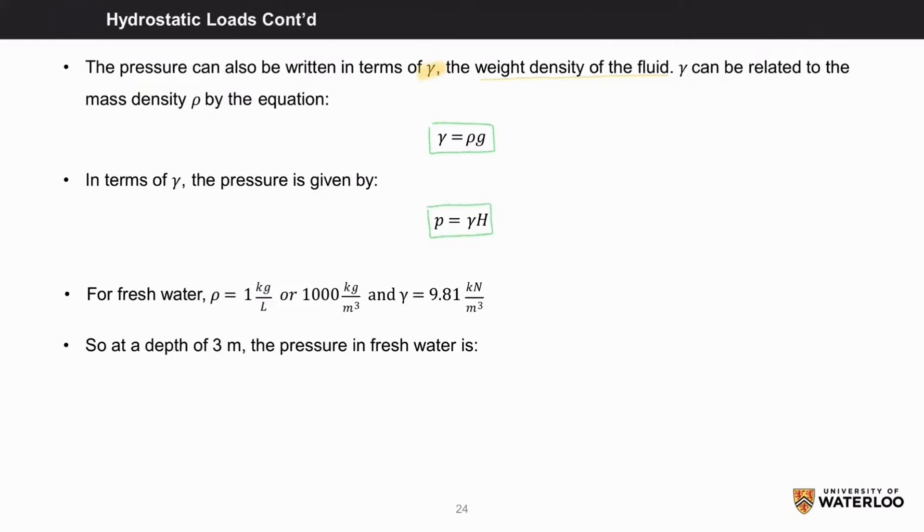For fresh water, rho is one kilogram per liter, or 1000 kilograms per meter cubed, and gamma is 9.81 kilonewtons per meter cubed.